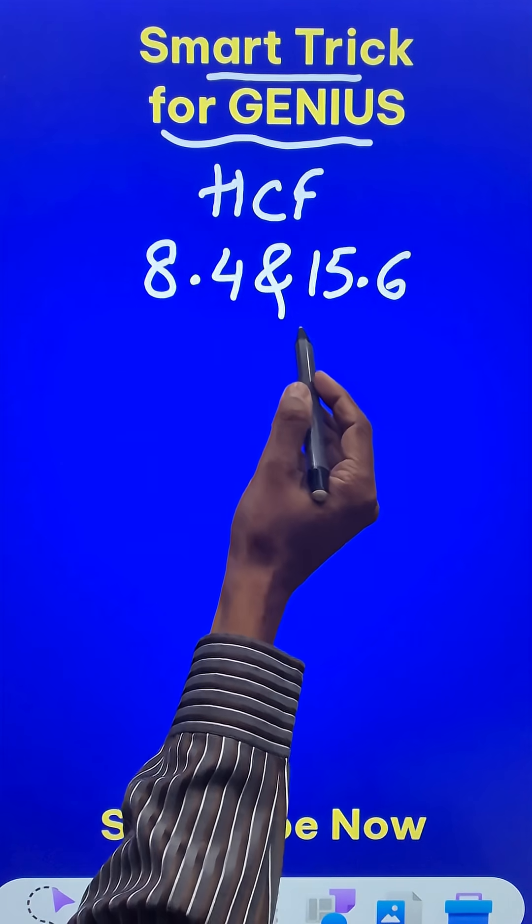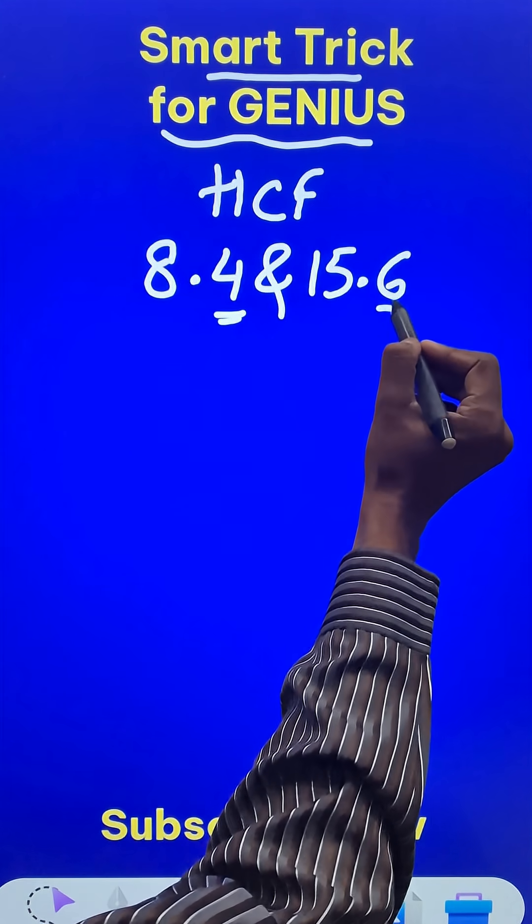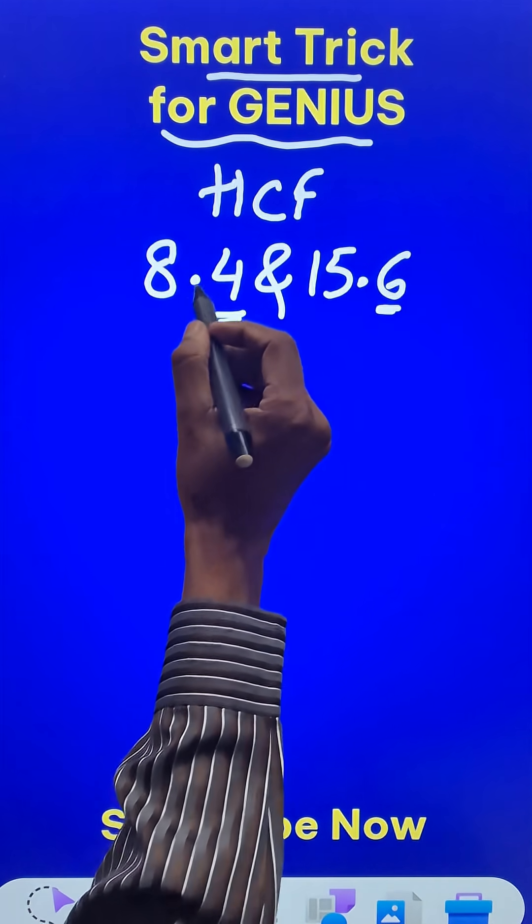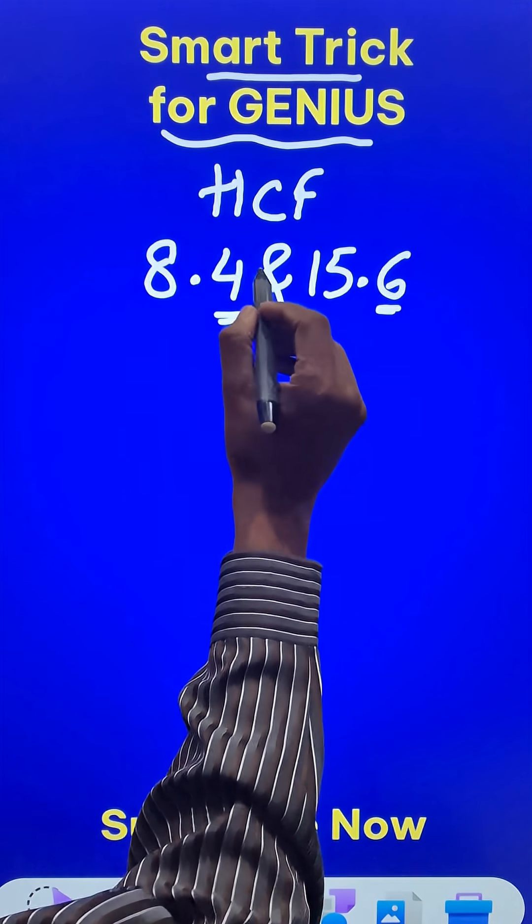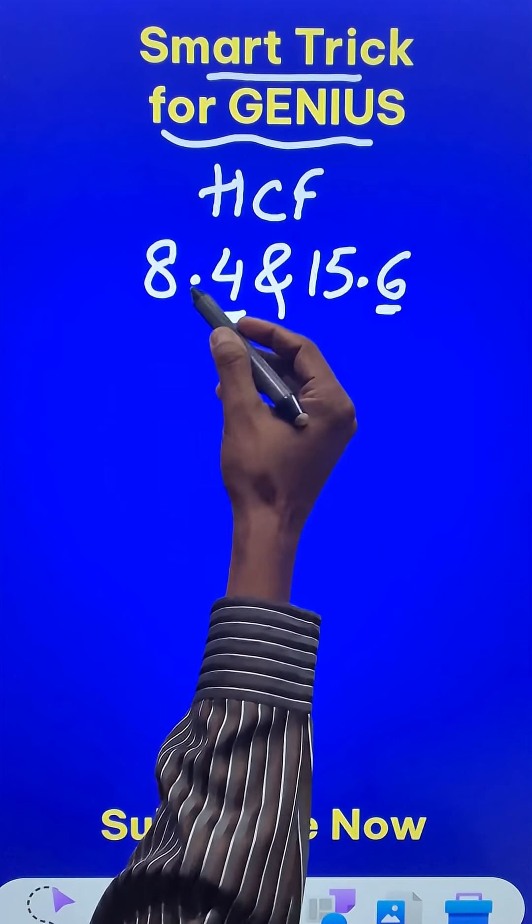Now the first thing you have to observe is that 8.4 and 15.6 each have one decimal place. If they have unequal decimal places, you have to first equate the number of decimal places by suffixing zeros. Here there is no problem, so just forget the decimal first.